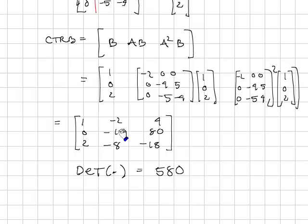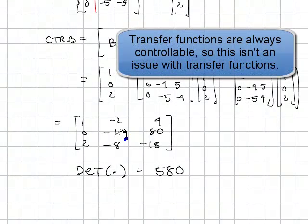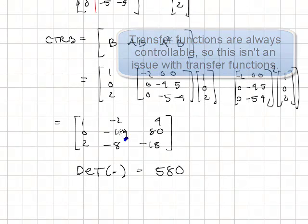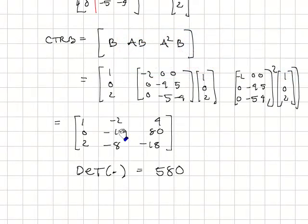Controllability is important when we want to be able to affect all the states of the system and we want to design a controller where the input is U. If the system is non-controllable, it means that no matter what control system we come up with, we will not be able to affect some of the internal states of the system with our controller that goes through U.